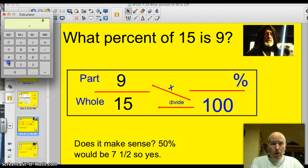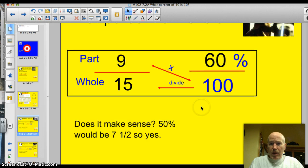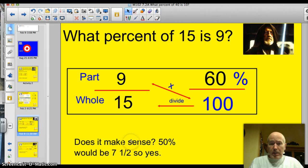9 times 100. That would be 900. And I will divide that by 15. That gives me 60, 60 percent. Now, the question is, does it make sense? Yes. Well, 50 percent of 15 would be 7 and a half. So 9 is going to be bigger than 50 percent by a little. So 60 percent does make sense. Good job. We solved our first problem together.